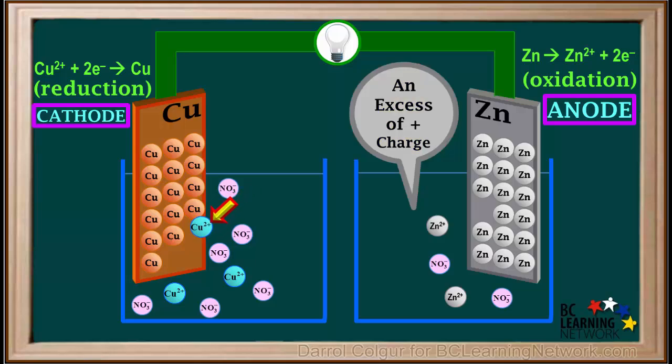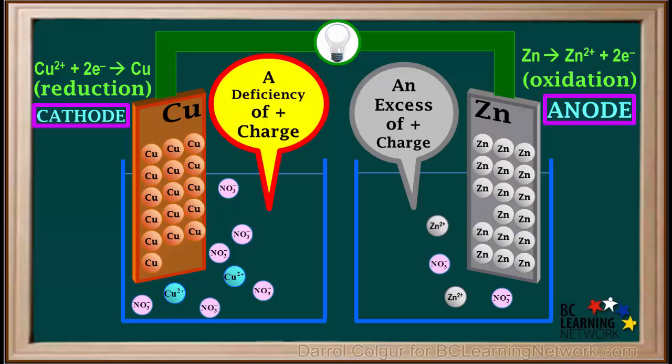And looking at the cathode on the left, as copper cations leave the solution and attach to the metal, forming copper atoms, a deficiency of positive charge would develop in the copper nitrate solution. Notice we have a total of four positive charges and six negative charges on the ions depicted in this solution.